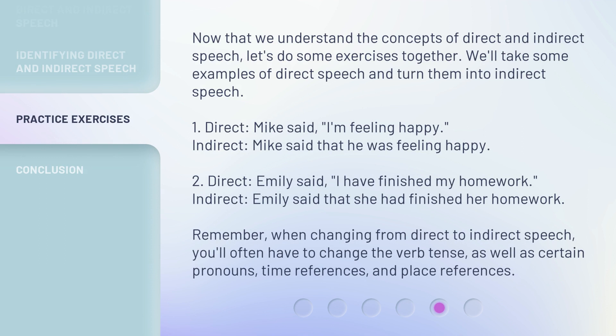Now that we understand the concepts of direct and indirect speech, let's do some exercises together. We'll take some examples of direct speech and turn them into indirect speech. 1. Direct: Mike said, 'I'm feeling happy.' Indirect: Mike said that he was feeling happy. 2. Direct: Emily said, 'I have finished my homework.' Indirect: Emily said that she had finished her homework. Remember, when changing from direct to indirect speech, you'll often have to change the verb tense, as well as certain pronouns, time references, and place references.